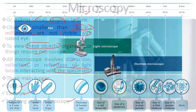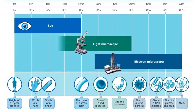This image shows different objects and which type of microscope is needed to observe them. Objects like the height of a five-year-old child, width of a hand, or width of a finger are visible to the naked eye. To observe smaller objects like the thickness of human hair, size of a red blood cell, or size of a bacterium, we require a light microscope. To observe extremely small or ultramicroscopic objects like biomolecules, subcellular particles, or atoms, we require the advanced electron microscope, which can observe objects as small as 0.1 nanometers and provides magnification up to 50 lakh times.